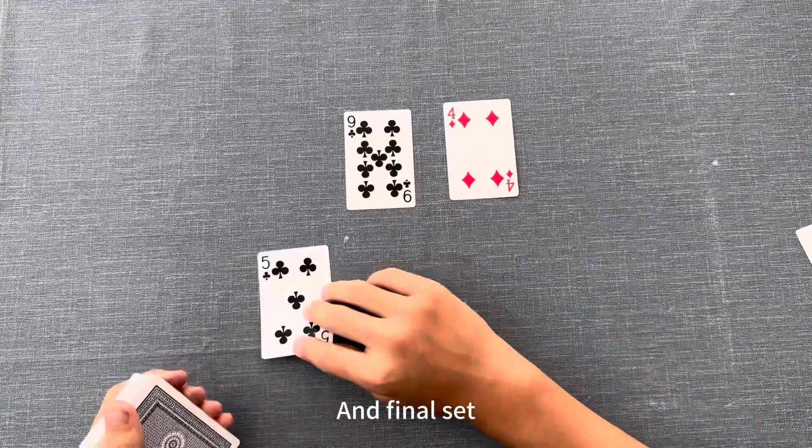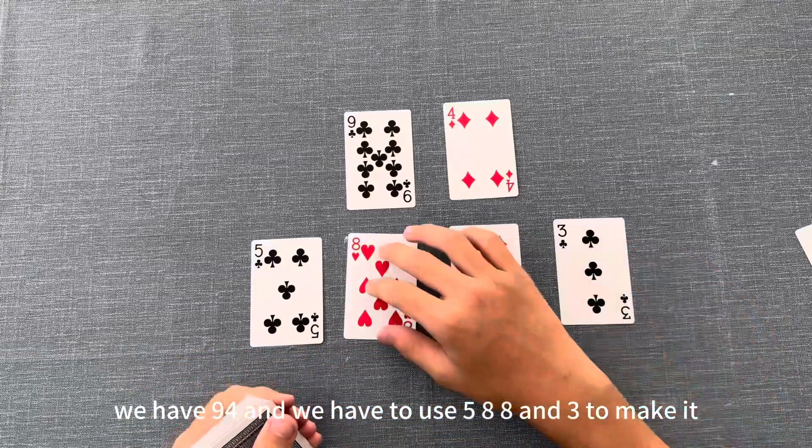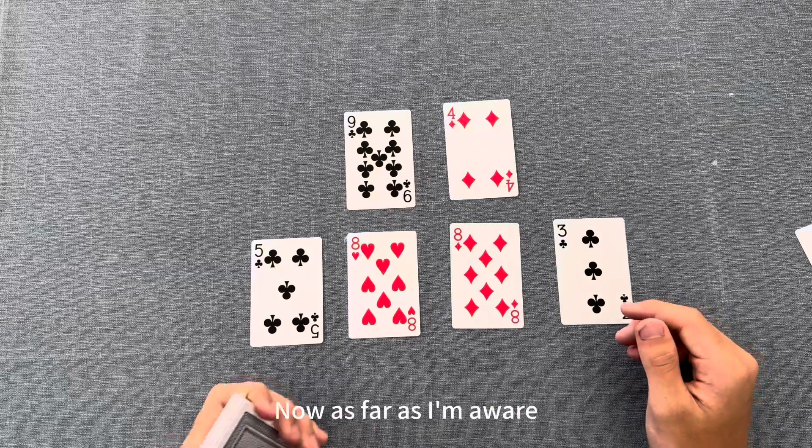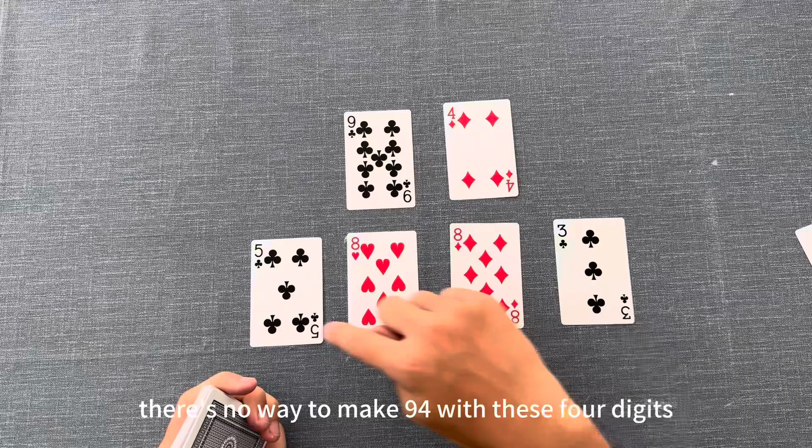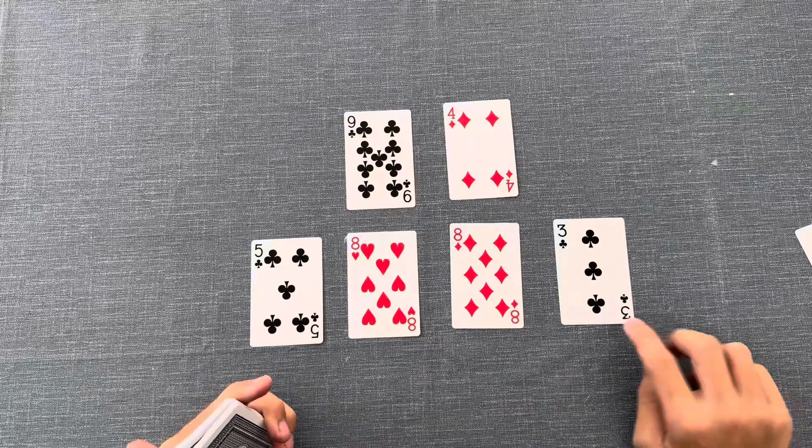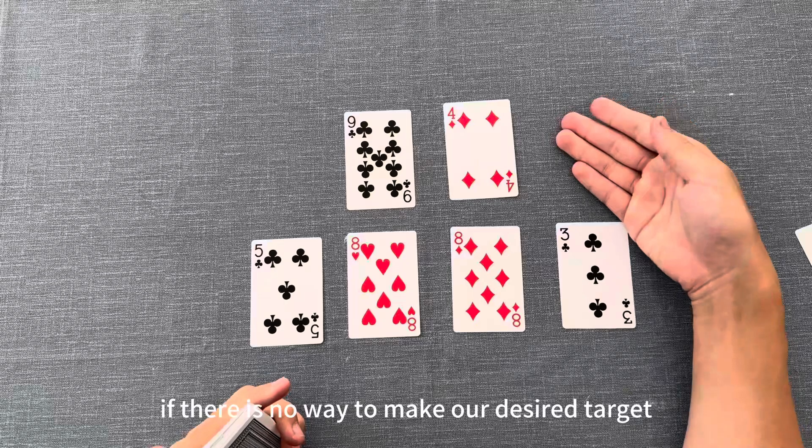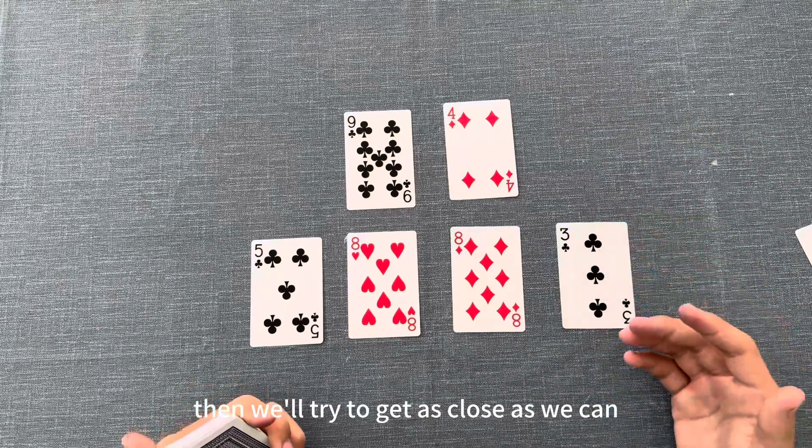For the final set, we have 94, and we have to use 5, 8, 8, and 3 to make it. Now, as far as I'm aware, there is no way to make 94 with these four digits, but if there is no way to make our desired target, then we'll try to get as close as we can.